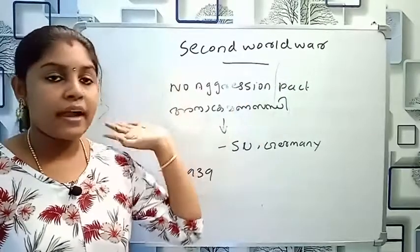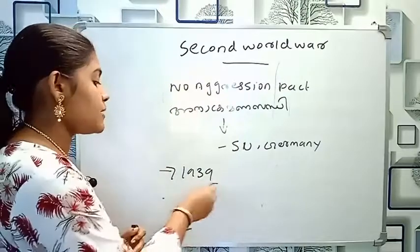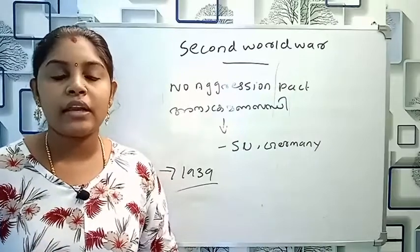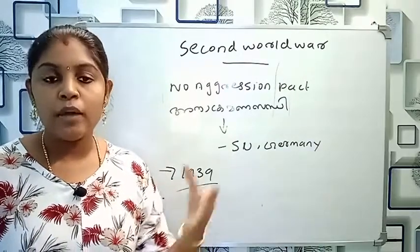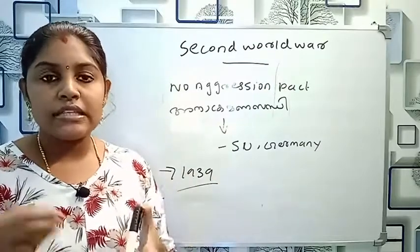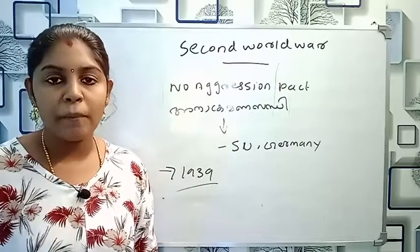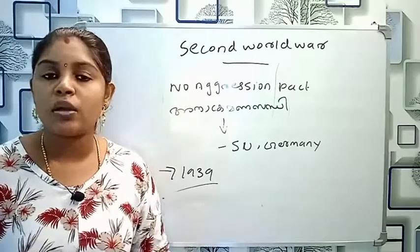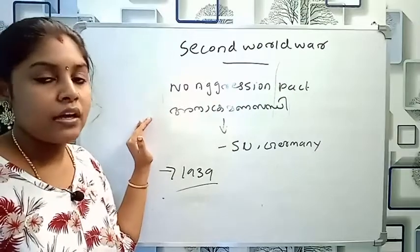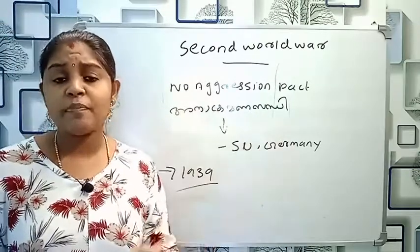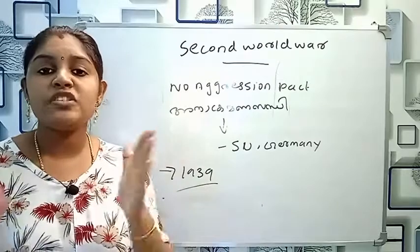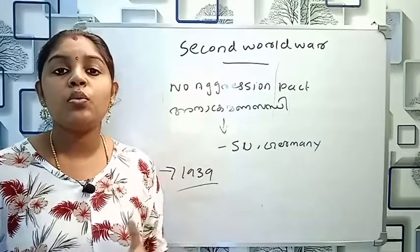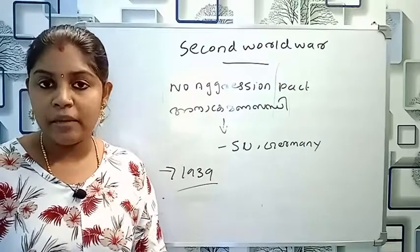There is a Non-Aggression Pact. As a result of this pact, Germany moved into Poland. Japanese forces also followed while Germany was present. Germany invaded Poland on September 1st, 1939, as a result of the Non-Aggression Pact.